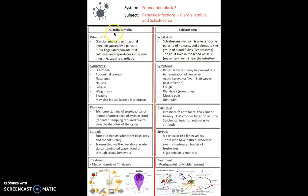Giardia lamblia is an intestinal infection caused by a flagellated parasite that colonizes and reproduces in the small intestine, causing Giardiasis. Symptoms include diarrhea, abdominal cramps, flatulence, nausea, fatigue, and weight loss. Diagnosis uses trichrome staining of trophozoites or immunofluorescence of cysts in the stool. It's spread via zoonotic transmission though this is rare — the main route is the fecal-oral route via contaminated water, food, or sexual behaviour. Treatment is with metronidazole or tinidazole.